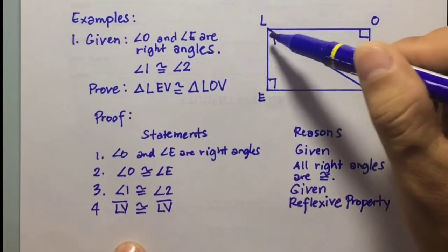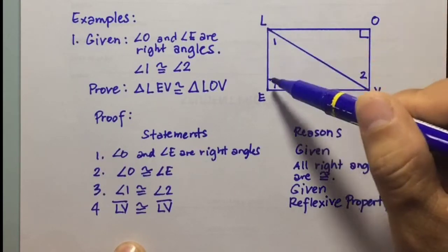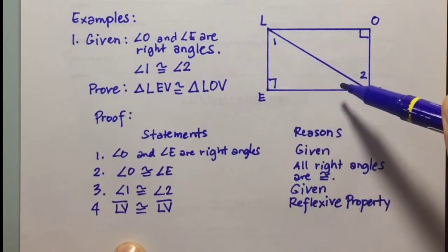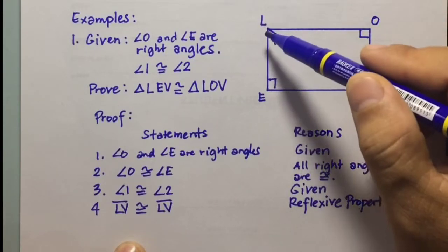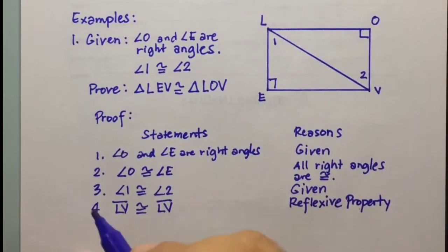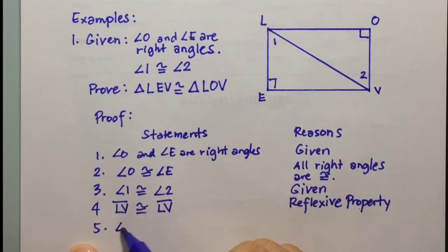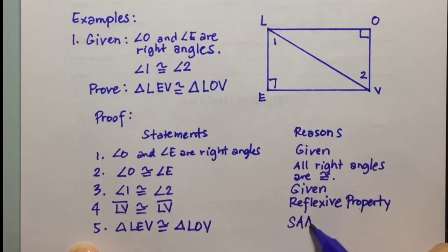We now have a side and two angles, and this side is non-included. So we have proven that triangles L-E-V and L-O-V are congruent. The final statement is: triangle L-E-V is congruent to triangle L-O-V, and the reason is the SAA congruence postulate.